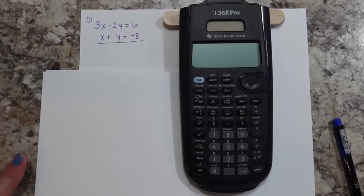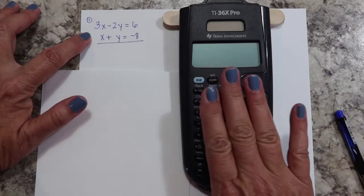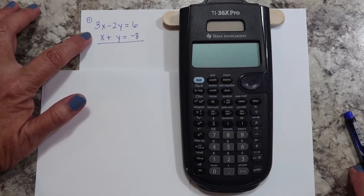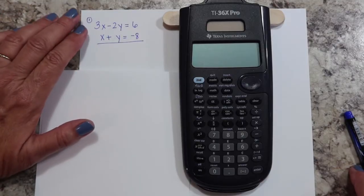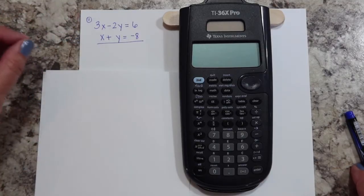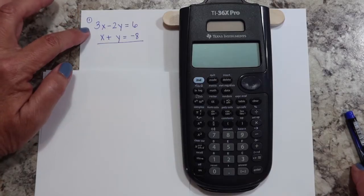Let's have a look at what an incredible time saver being able to solve systems of equations on a calculator will be. This is a system of equations: two equations with the same variables, and you are trying to find the one set of numbers that makes both of these true at the same time.